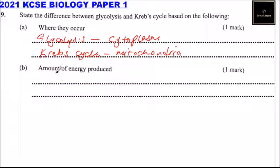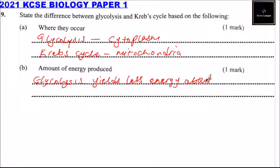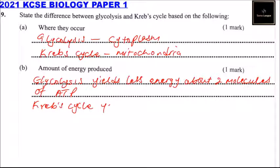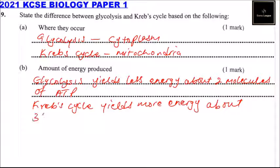In terms of amount of energy: glycolysis yields less energy — about two molecules of ATP. The Krebs cycle yields more energy — about eight molecules of ATP.